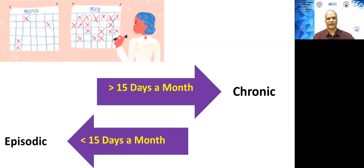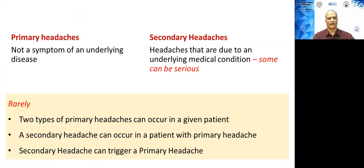If these headaches occur for more than 15 days a month, we term them as chronic; otherwise, we term them as episodic headaches. Primary headaches are the ones that don't have an underlying disease, whereas secondary headaches are due to an underlying medical condition, and some of them can be serious problems.